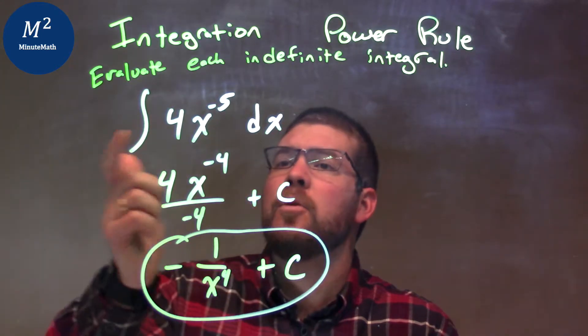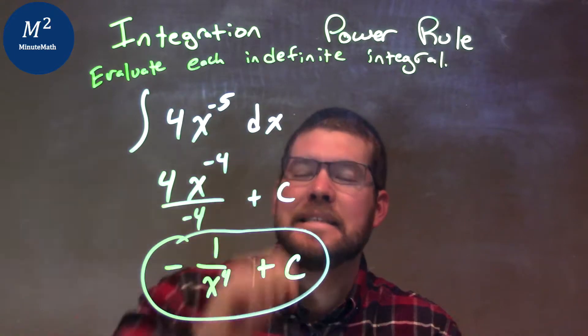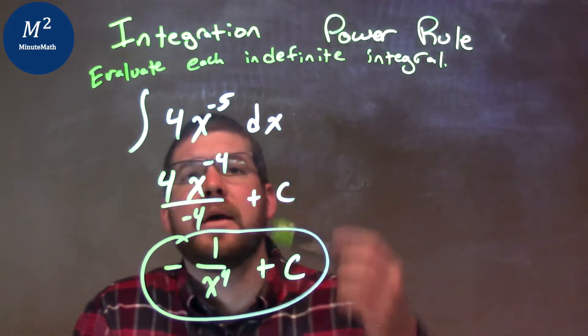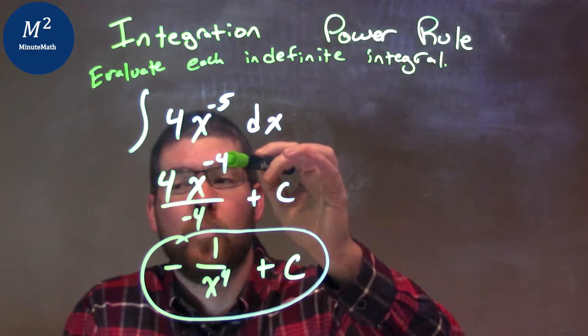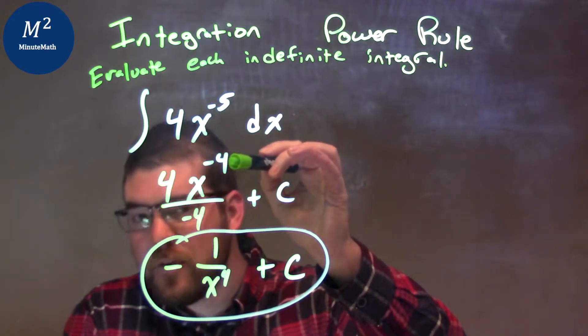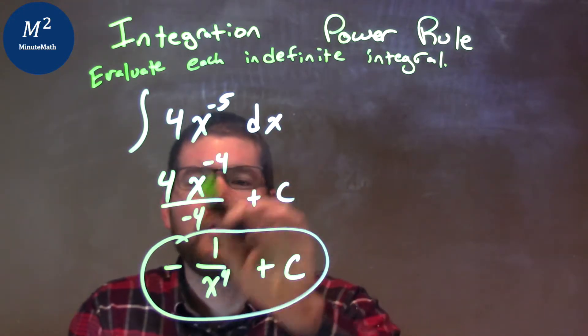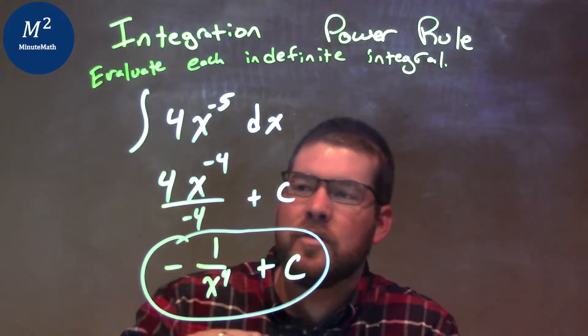So let's recap. We're given the integral of 4x to the negative 5th dx. That exponent, our power rule says we take that exponent, we add 1 to it, so negative 5 plus 1 is negative 4, and we divide by that exponent as well. And don't forget to plus c.